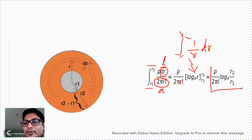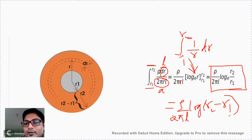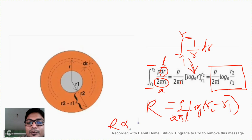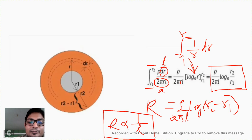From this formula, R is inversely proportional to L. This is a very important point to remember — it will be asked in many objective and competitive examinations. Insulation resistance is inversely proportional to the length of the cable, unlike conductor resistance which is directly proportional. So as cable length increases, insulation resistance decreases.